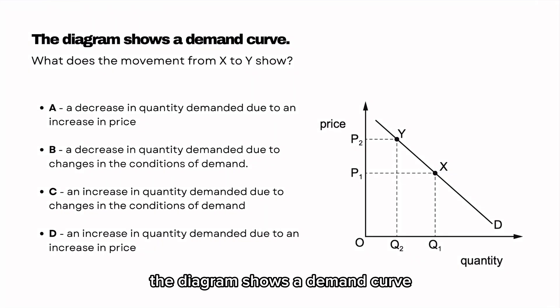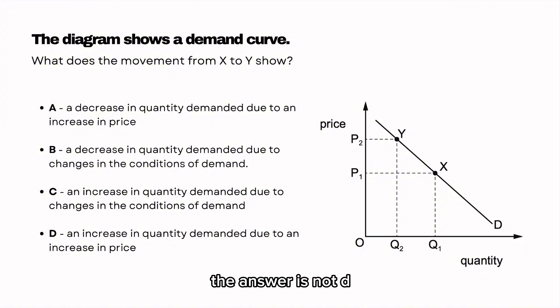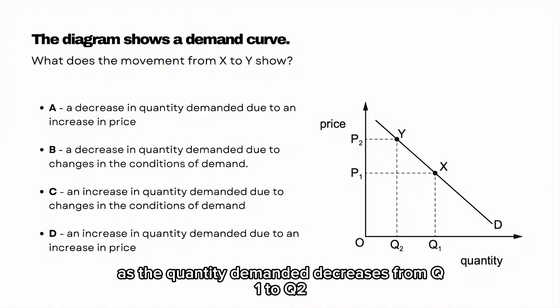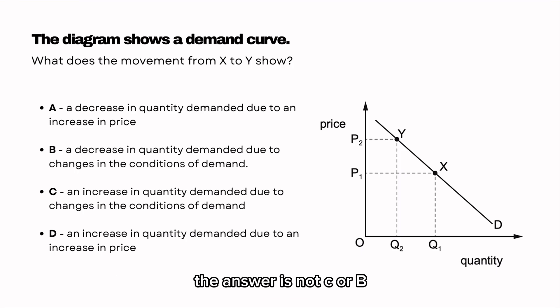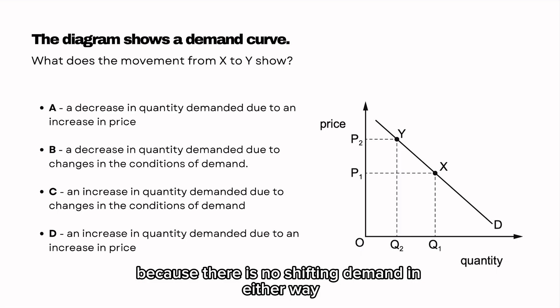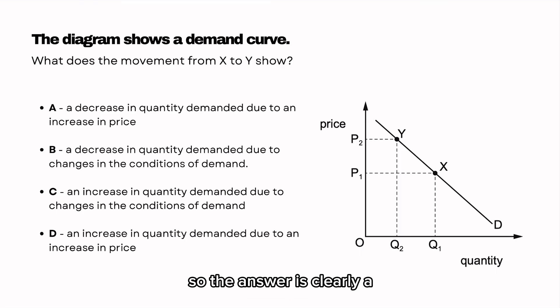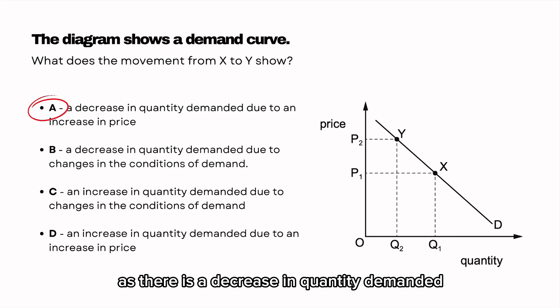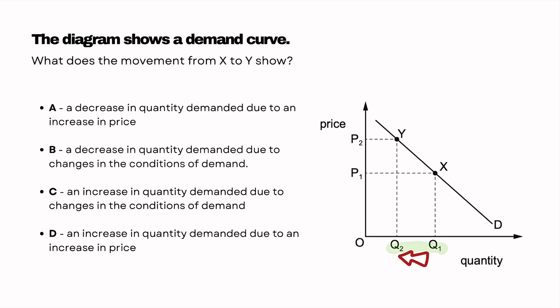The diagram shows a demand curve. What does the movement from X to Y show? The answer is not D as the quantity demanded decreases from Q1 to Q2. The answer is not C or B because there is no shift in demand in either way. So the answer is clearly A, as there is a decrease in quantity demanded with an increase in price.